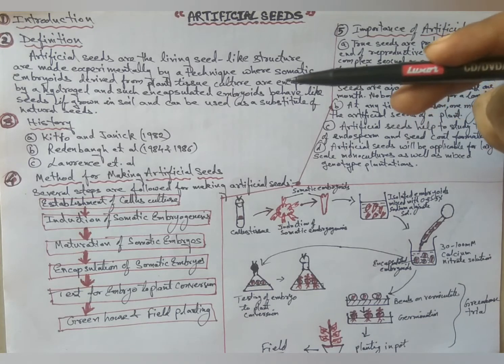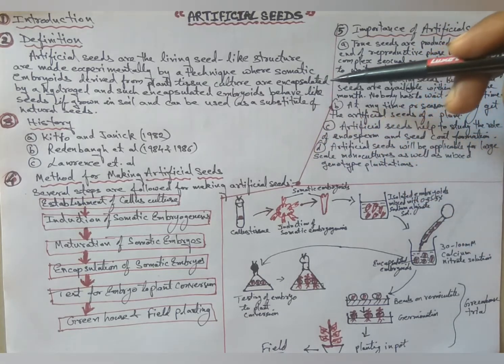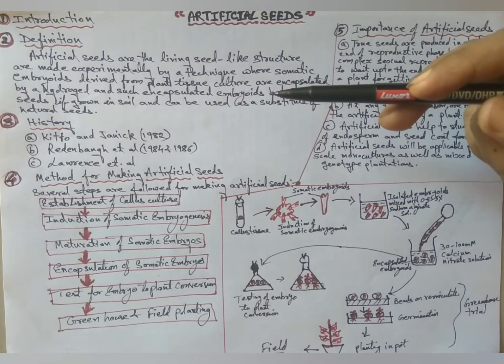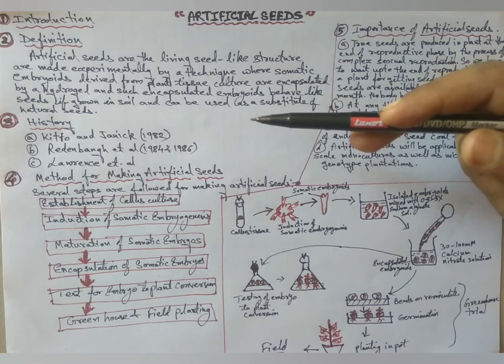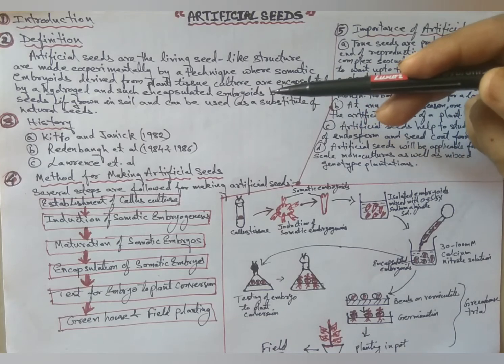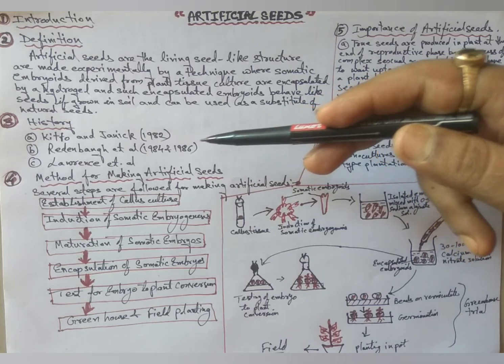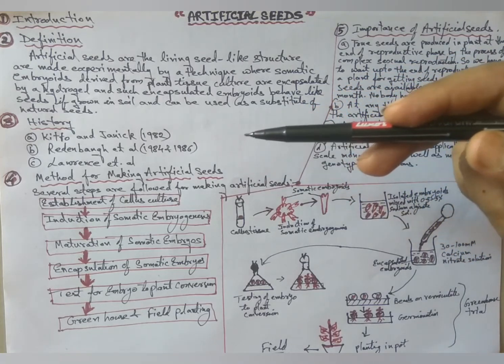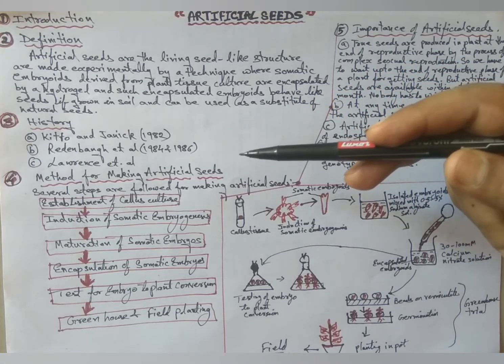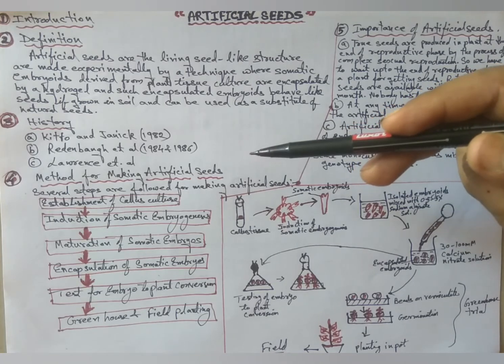Such encapsulated embryos behave like seeds if grown in soil and can be used as a substitute of natural seeds. History: Keto and Genic 1982 first coated clumps of carrot embryos with polyoxetine to develop artificial seeds.